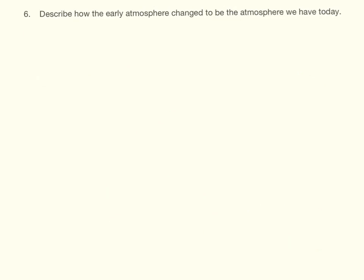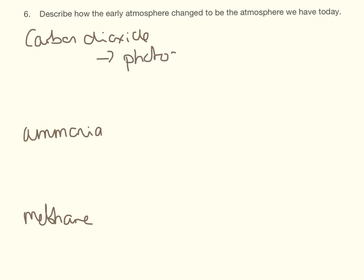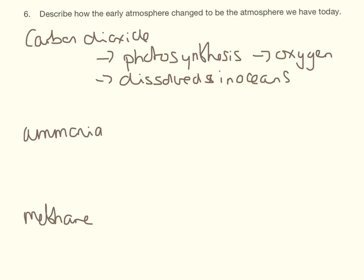The early atmosphere is very different from the one that we have today. It was mainly made up of carbon dioxide, some ammonia, and then a little bit of methane in there as well. And there are a number of ways that this has changed. So the carbon dioxide was used in photosynthesis, and this produced a lot of the oxygen. A lot of the carbon dioxide was also dissolved in the oceans.